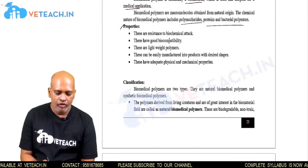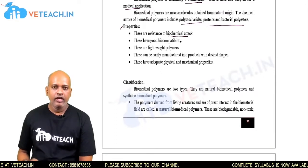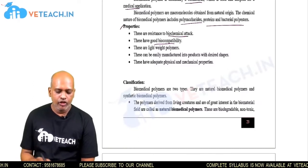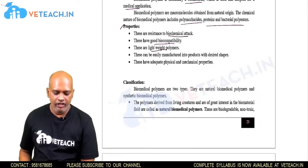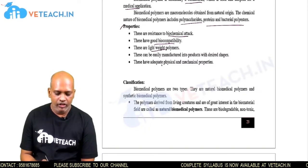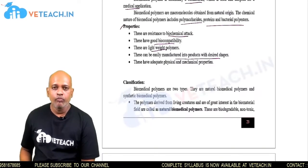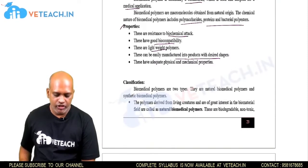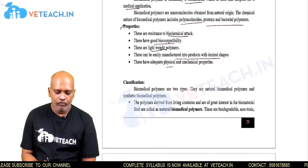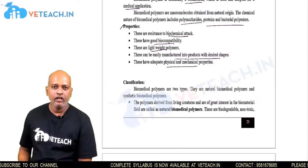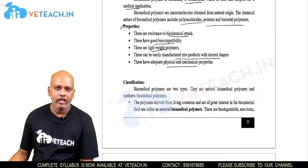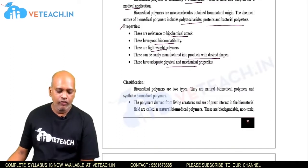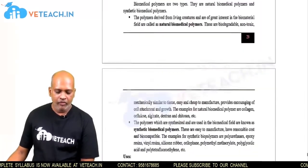The properties of biomedical polymers include very good resistance against biochemical attack, good biocompatibility, and they should be very lightweight. They must be capable of being manufactured into desired shapes, with good physical and mechanical properties.